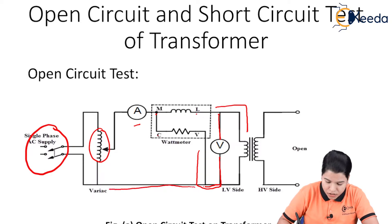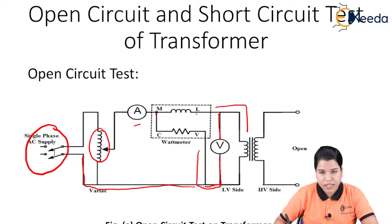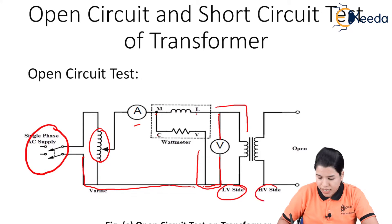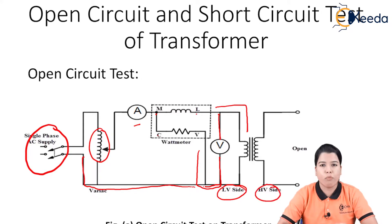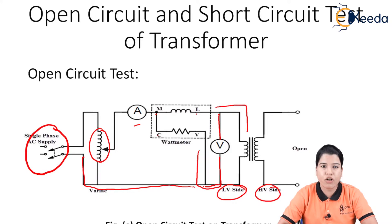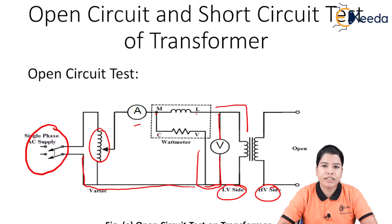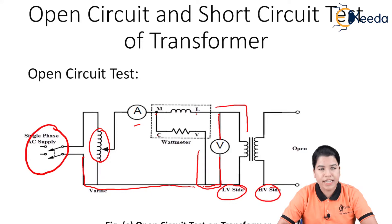The same terminal goes to the negative of the supply. The supply is given to the LV side, whereas the HV side is kept open. Hence, the secondary winding is open, and the test is called the open circuit test. To perform the test, we consider the rated voltage of the primary winding and vary the auto transformer until we get that rated voltage supplied to the primary winding.